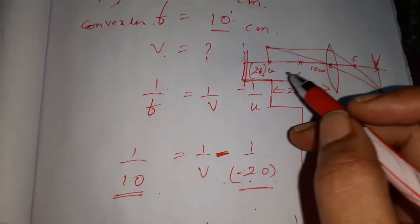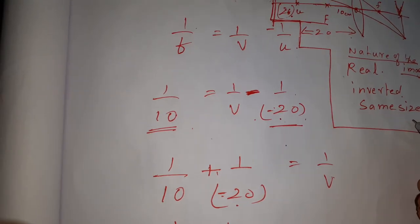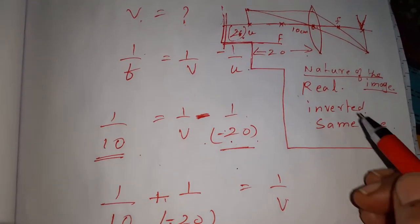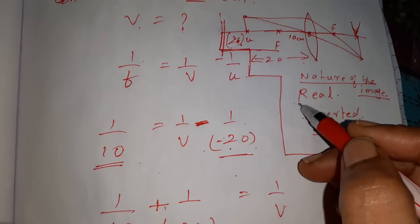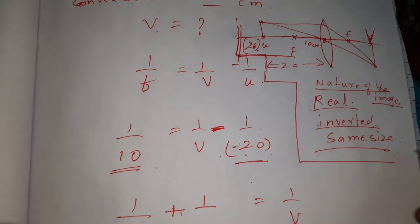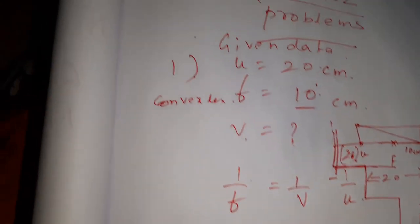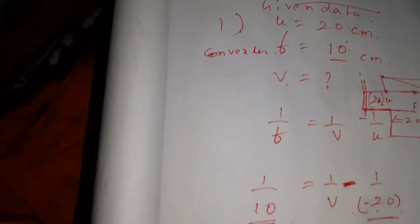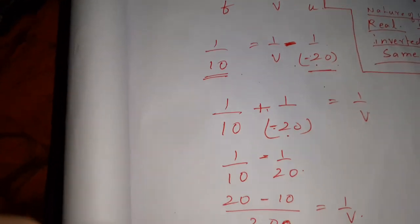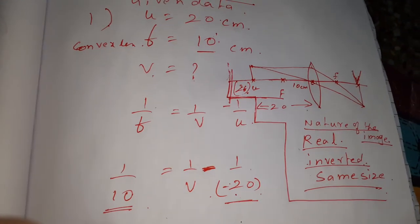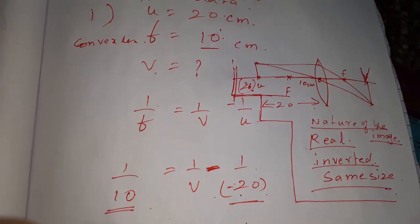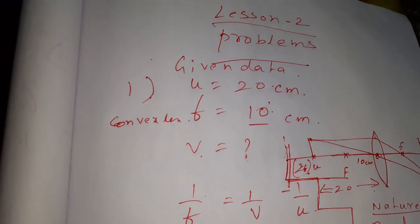Okay, so same size, same size of the object. Image is inverted and real. These are all the nature of the image. Have you understood the problem and the drawing? Okay, good. We will see the second problem.